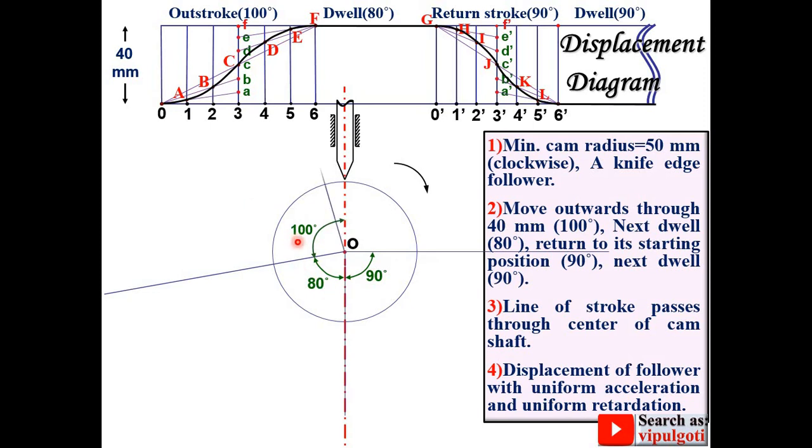Now divide this outstroke into six equal parts. Because you have divided this outstroke into six equal parts in displacement diagram. And give the name as 0, 1, 2, 3, 4, 5, 6 as you have given in the displacement diagram.